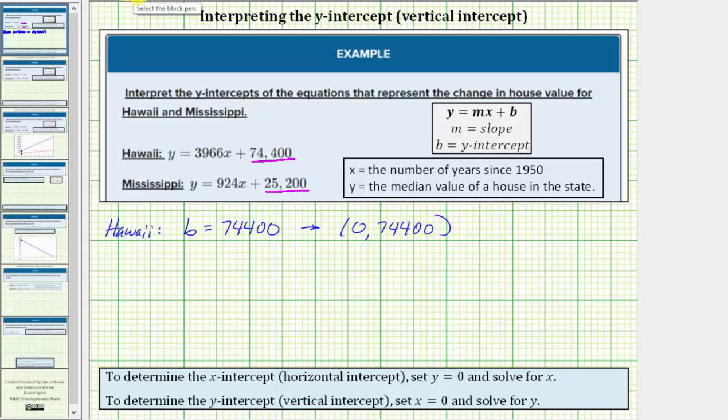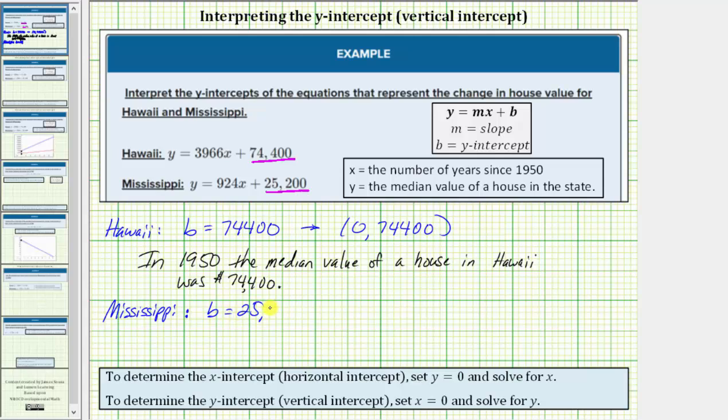Let's write this as a sentence. Now let's consider Mississippi. We know the y-intercept or b is equal to 25,200. As an ordered pair, this would be zero comma 25,200, which means in 1950, the median value of a house in Mississippi was $25,200.